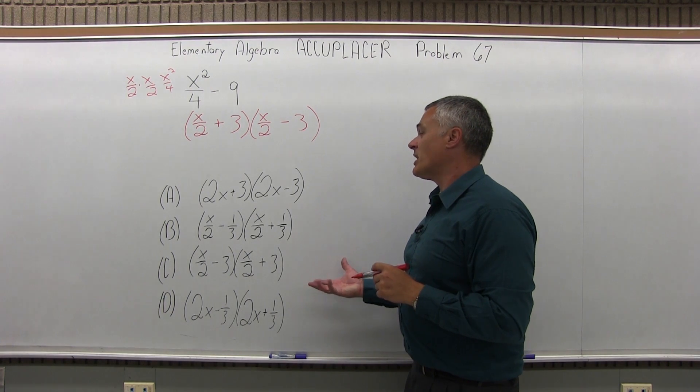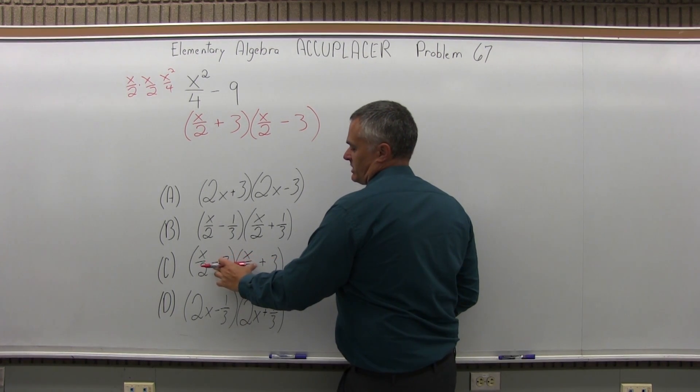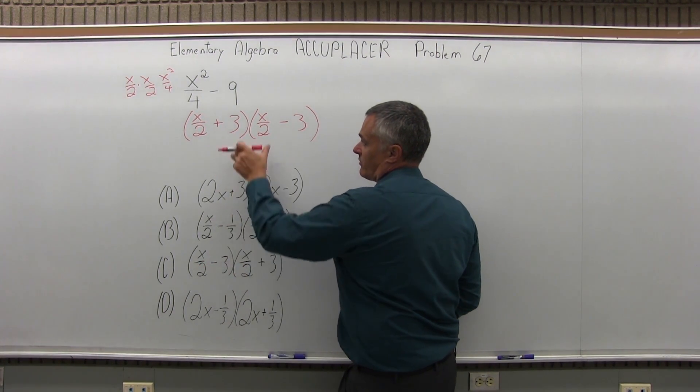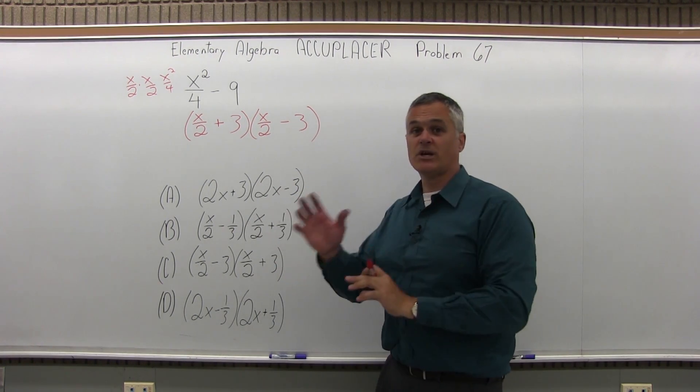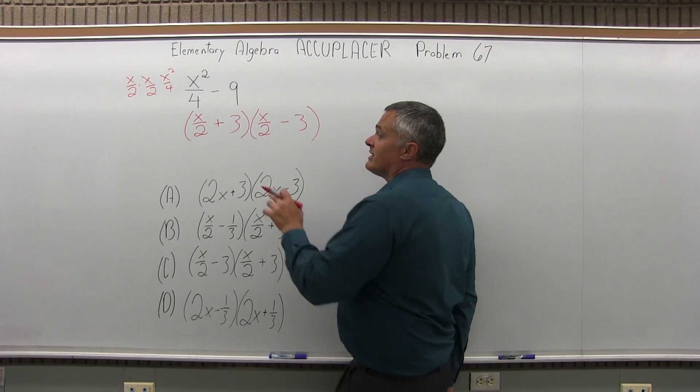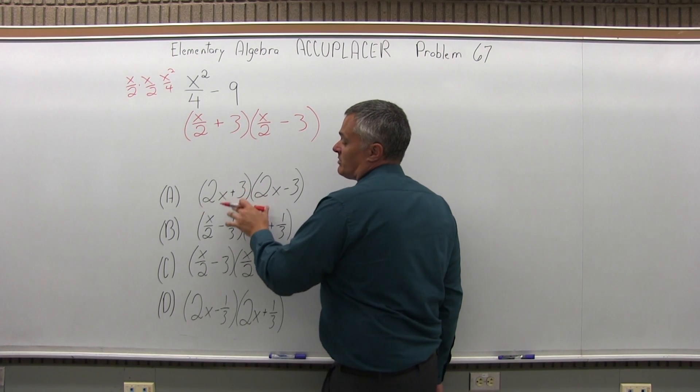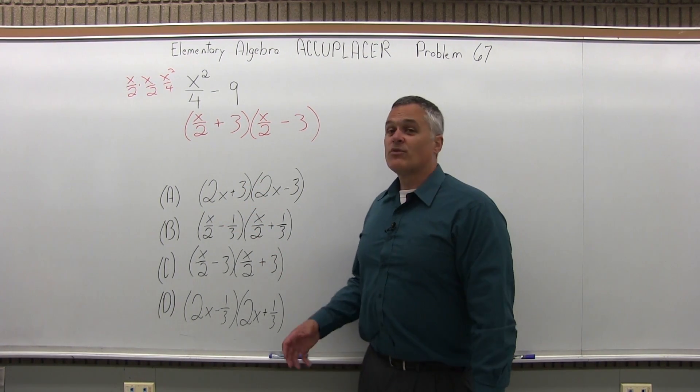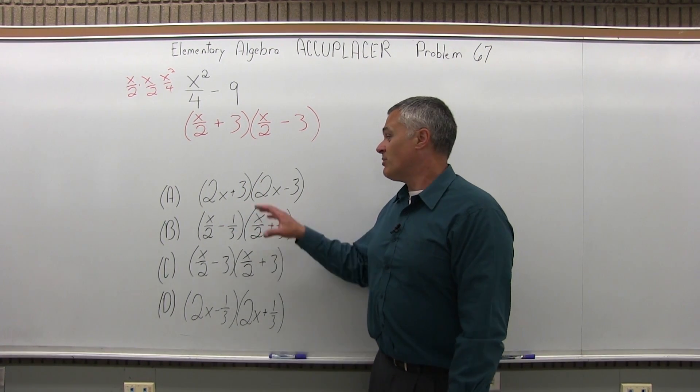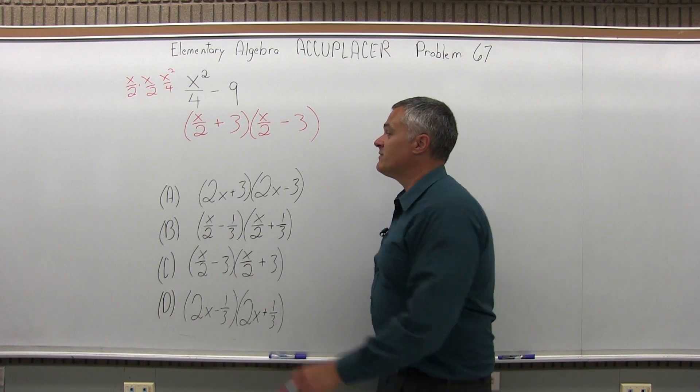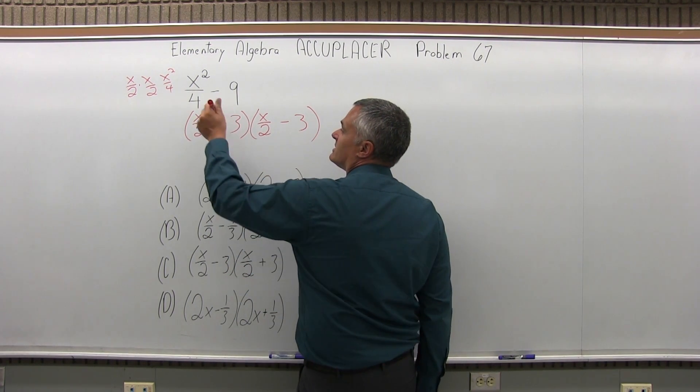And that does actually match one of my options. The plus and the minus are in the wrong order from what I have written, but since it's multiplied, you can switch them. And you can check that to verify, just to make sure, because sometimes they think of what the common mistakes are and they'll put that in as one of the options. But if you FOIL it out and check it, it does match up.